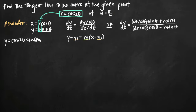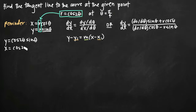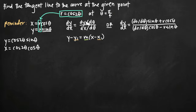So we have y equals cosine 2 theta times sine theta. Similarly for x, we plug in cosine of 2 theta to get x equals cosine of 2 theta times cosine of theta. Now we have equations for both y and x in terms of theta, so we can take the derivative of each with respect to theta, and you'll see the second slope formula emerge.